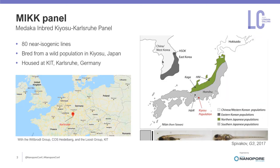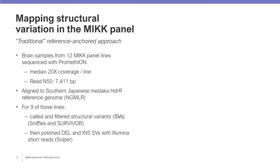Our group, in collaboration with the Witbrodt group at COS Heidelberg and the Loosely group at KIT, have taken advantage of this unique resilience to inbreeding to establish the medaka inbred Kyushu Karlsruhe panel, also known as the MYK panel, which comprises 80 near isogenic lines bred from a wild population near Kyushu in southern Japan, and is currently housed at KIT in Karlsruhe, Germany. We want to understand the nature of structural variation in the MYK panel because it may have important functional consequences for the complex traits that we study.